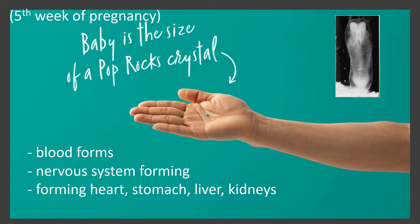Just a few days later you can see you dramatically look different. You are still attached at one side. You now have the shadow of a nervous system — this up here will become your brain, this line right down here will become your spinal column, and down here will become the pelvic area. You are still teeny tiny. However, at this point your blood actually forms, so you start getting red blood cells. Your nervous system is forming, and you are also starting to form your internal organs like your heart, stomach, liver, and kidneys. Your heart is basically the first one that needs to happen — it has to circulate stuff.